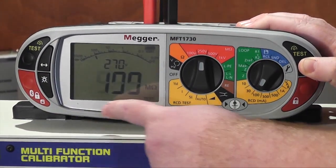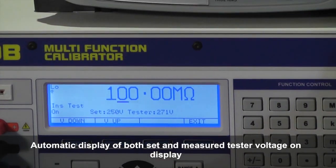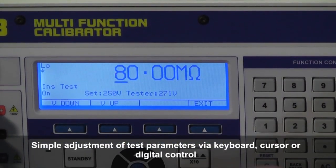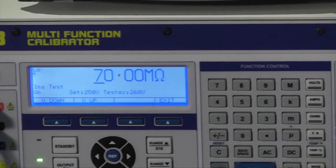As we can now see, the tester is reading 100 mega ohms. We can deviate the output using the cursors or the digital control to set the required output.